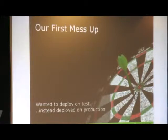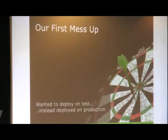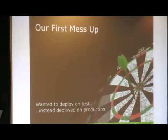Here's our first mess-up. One of our developers was trying to deploy requirement changes from a client to the test environment. He just ran 'cap deploy' and that's it — he didn't specify which environment he wanted to deploy to. So the whole code went to production. Everything started breaking and we started getting calls from the client asking what was happening and what was wrong.